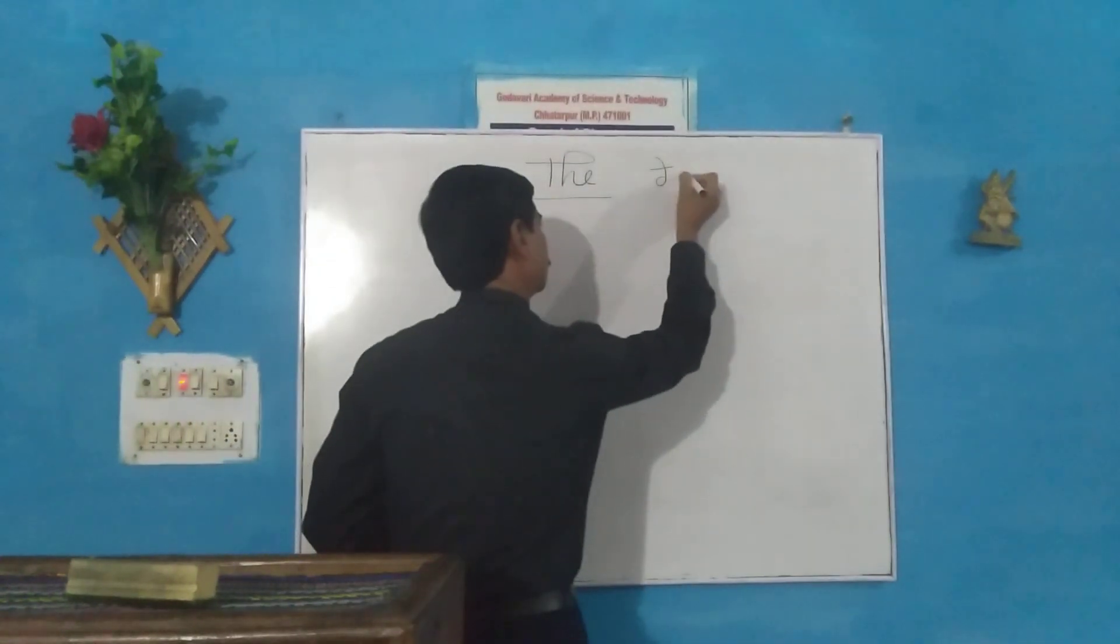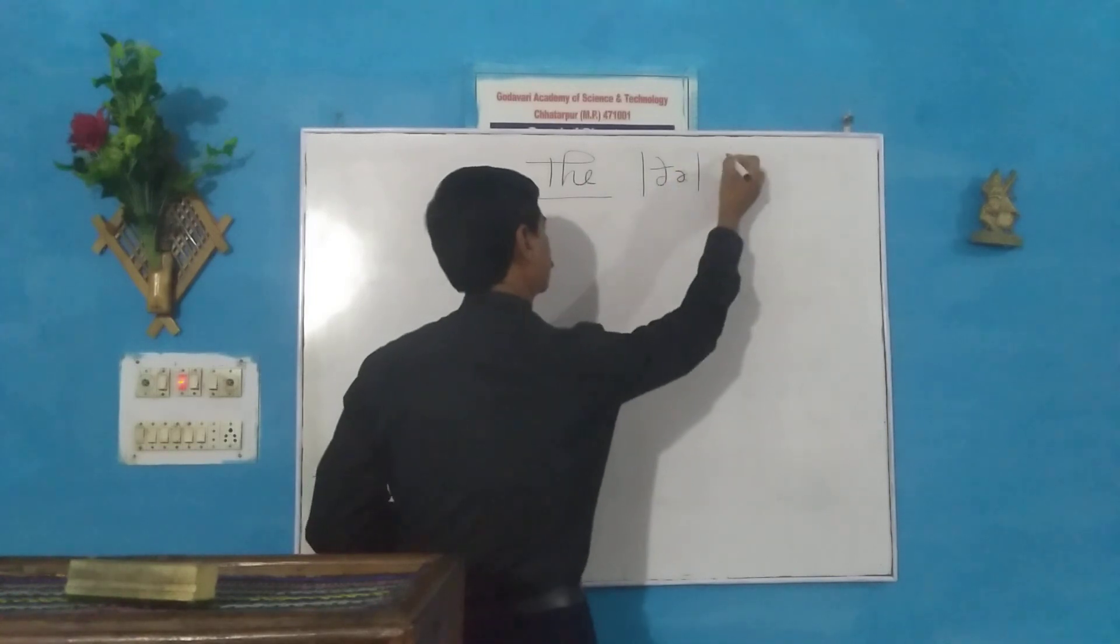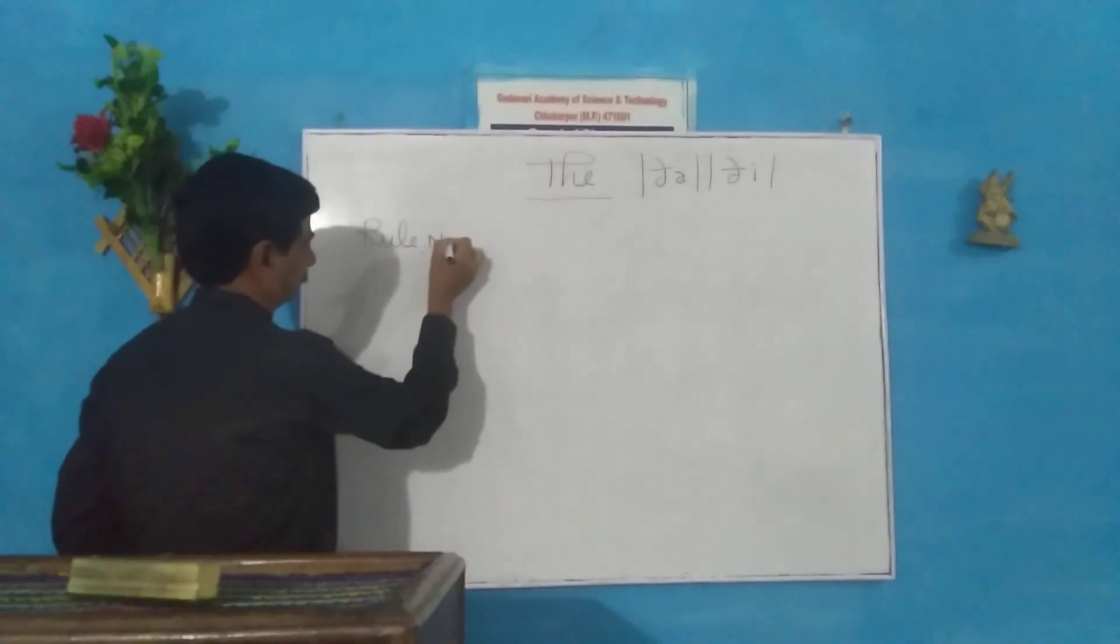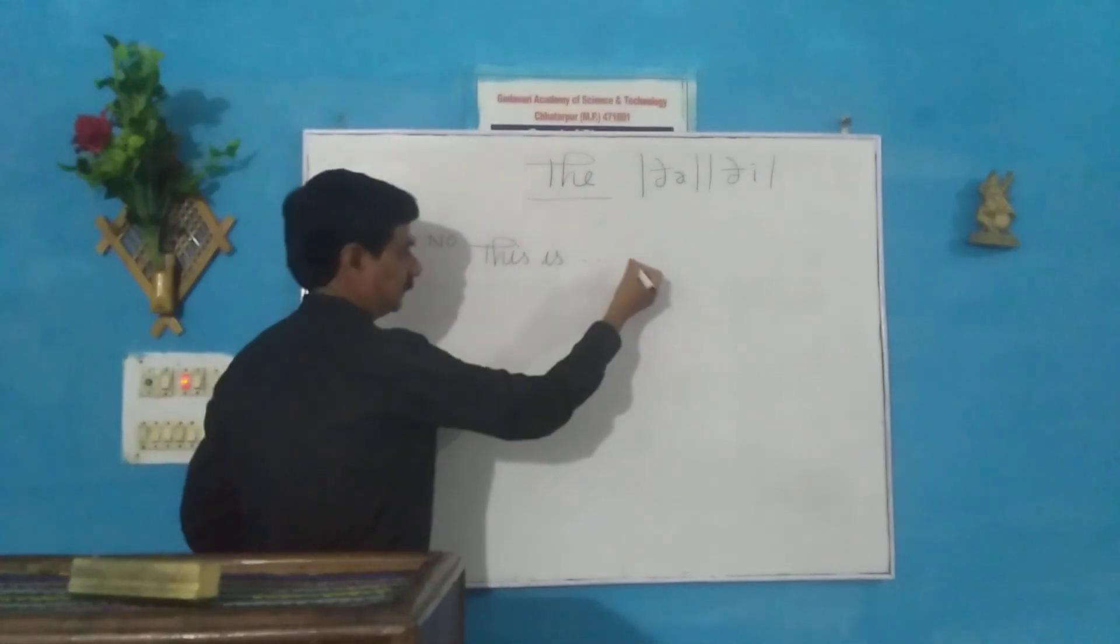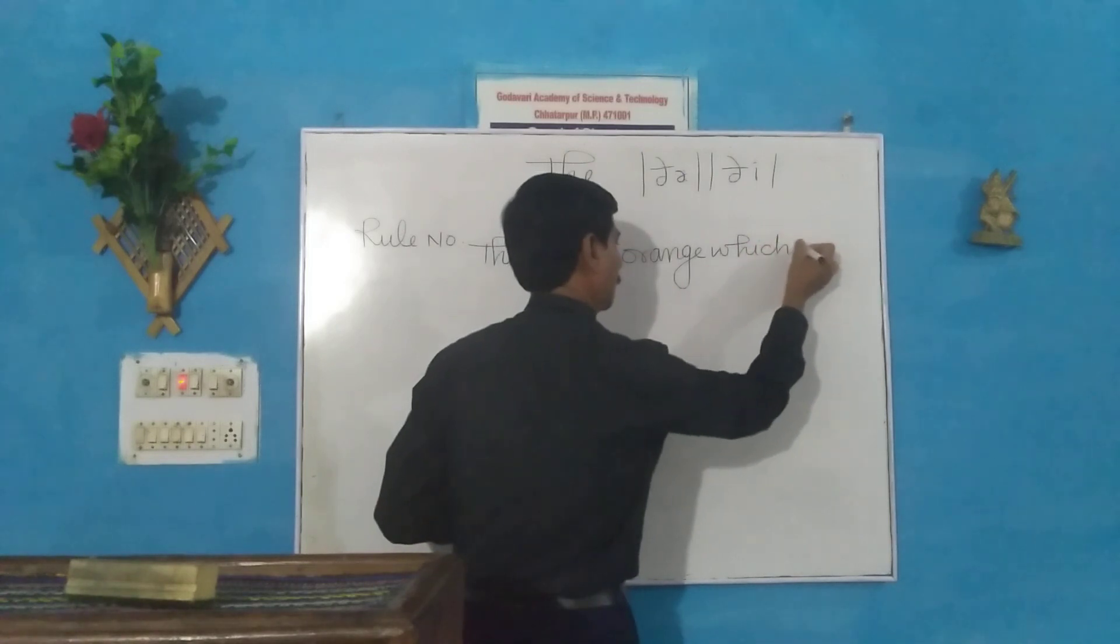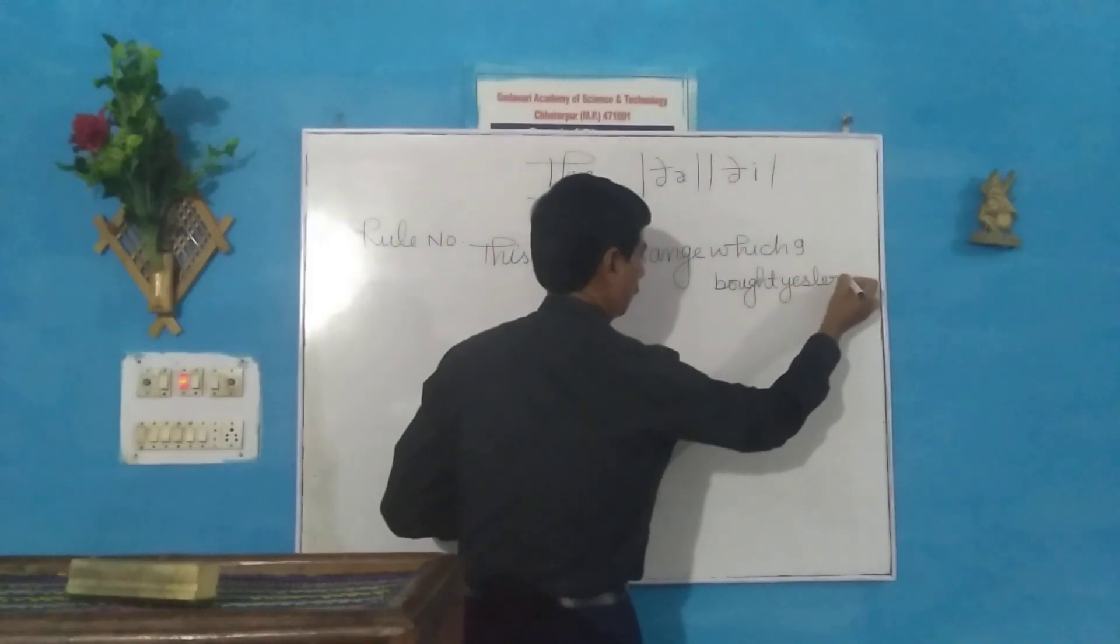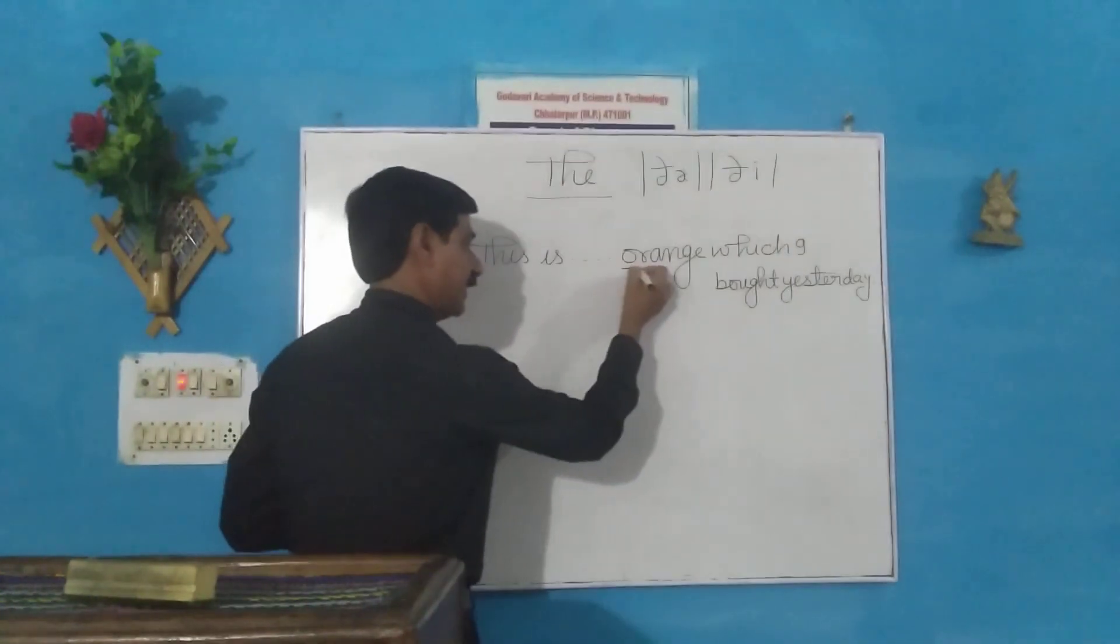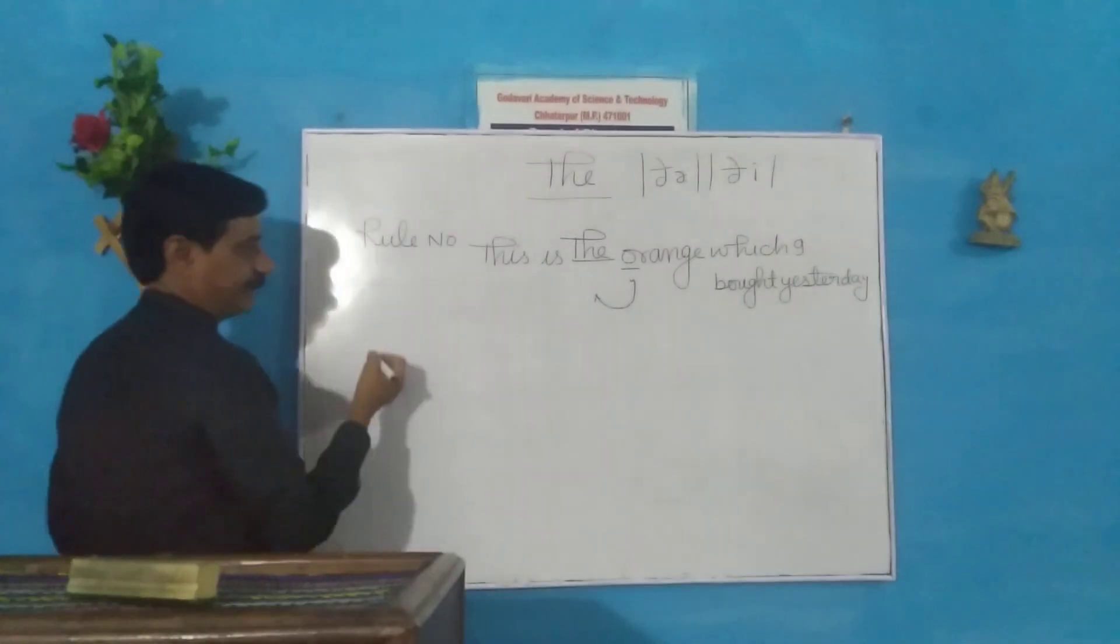Number one. This is the orange which I got yesterday. Here, orange is a particular orange, that's why the will come, and it's a specific orange which I got yesterday.